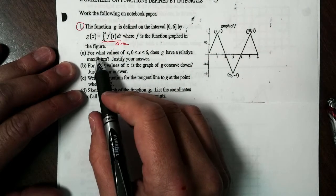So we want to find out where we have a relative maximum. Well, that's easy. That's where the g prime goes from positive to negative. So we can say there is a relative max at x equals 2, and that is because g prime of x goes from positive to negative. And there's our answer.